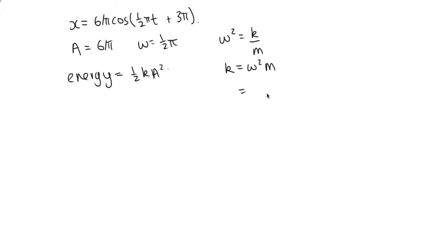So k is equal to 1 half pi squared times m. And we were told that m was 2. So this is equal to pi squared on 2.